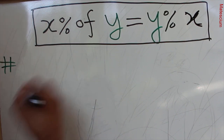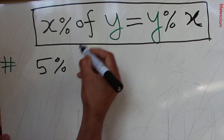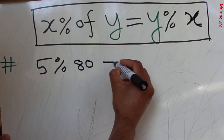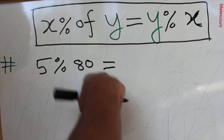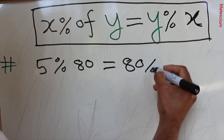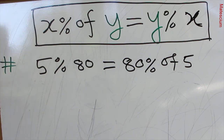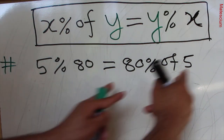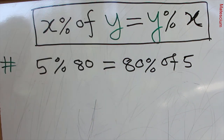Let us consider 5 percent of any number — let's say 80. According to this mathematical expression, the left-hand side will be equal to 80 percent of 5. How is it possible? I will prove that the left-hand side and right-hand side are equal, so this expression will be proved.